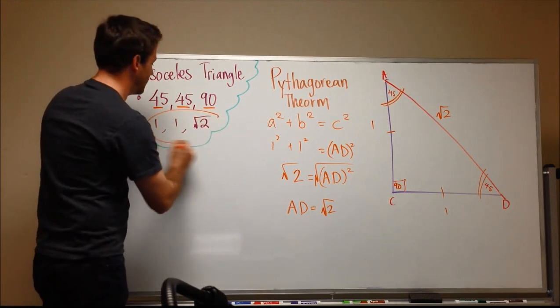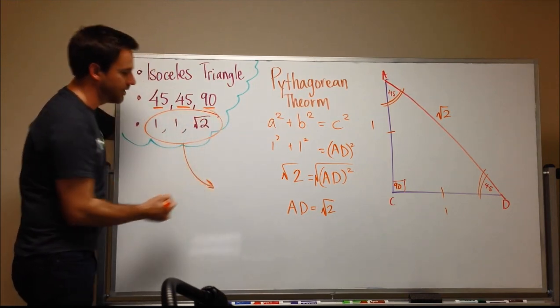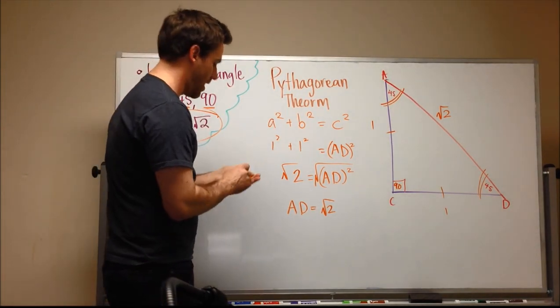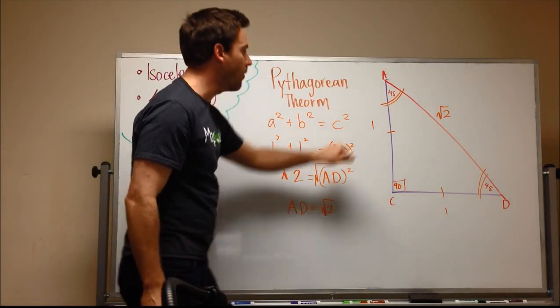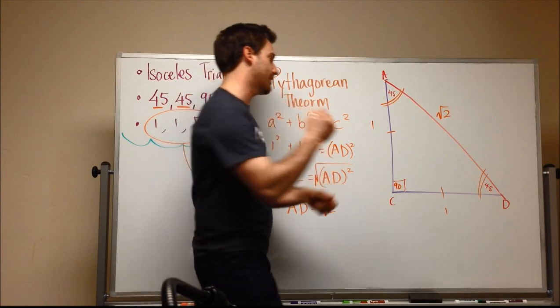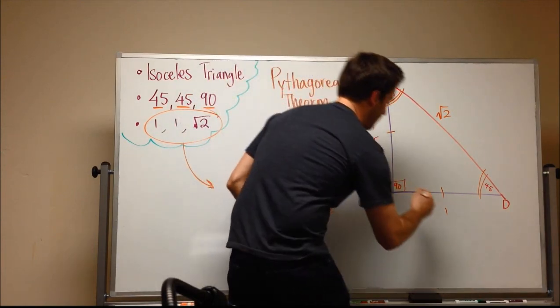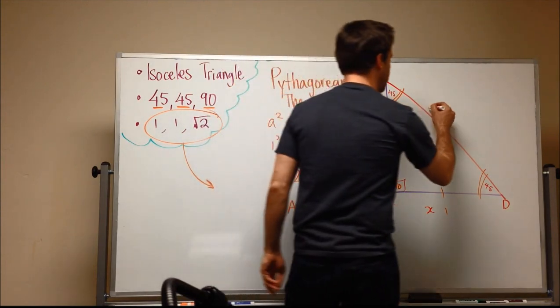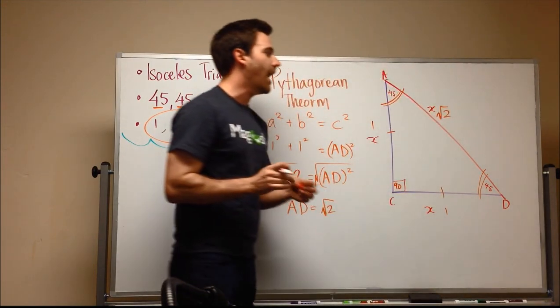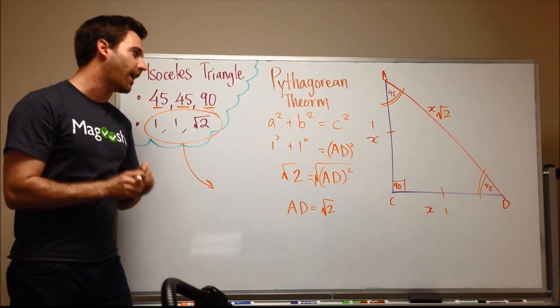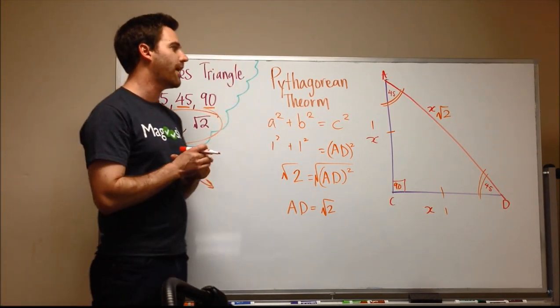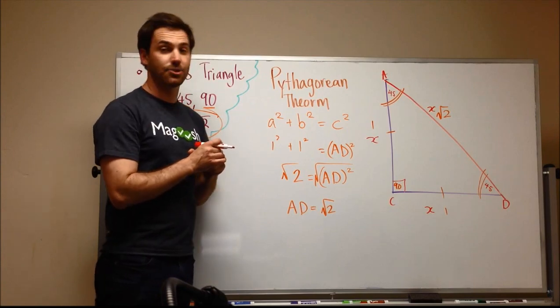But we can take this and generalize it and say that if one is not one but let's say it's x. That would make this x. And the only thing we need to do over here is put an x right there. And then we have a very easy way to deal with the sides and hypotenuse of this 45-45-90 degree triangle.